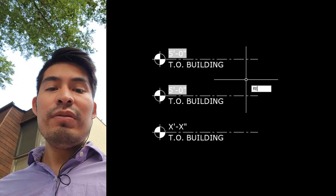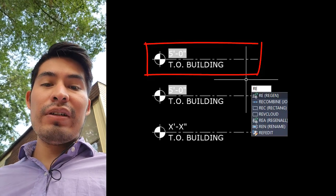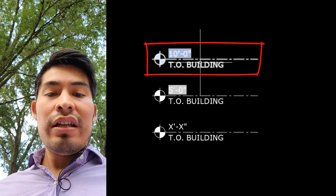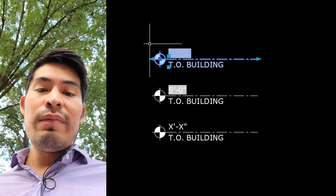Well, to me not anymore, because I created an AutoCAD dynamic block that will cover my back. This means not only will I save time by letting AutoCAD calculate my building heights, but also if I ever miss updating any of my elevation tags, AutoCAD will get me covered.